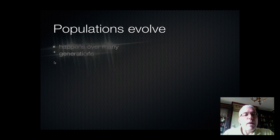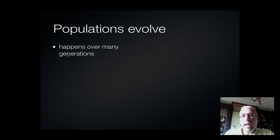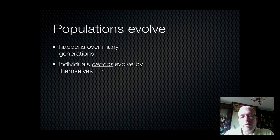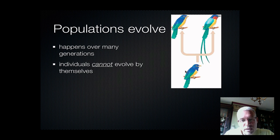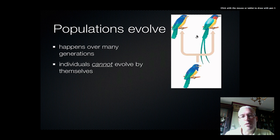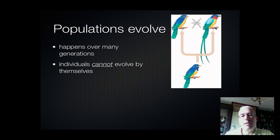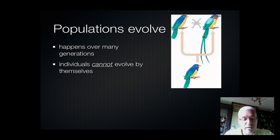All living things evolve as part of a population, and this is something that is very slow — it happens over many generations, so it's difficult for one person to observe evolution happening. It's important to remember that individuals cannot evolve by themselves. In this graphic, we can see an original ancestor species of bird traveling through time and staying the same, while the population splits into another species of bird that looks very different. If these two birds can no longer interbreed, then we have evolved a new species from an original species — this process called speciation is an example of evolution. All living things, from bacteria to plants to humans to trees, evolve over time.